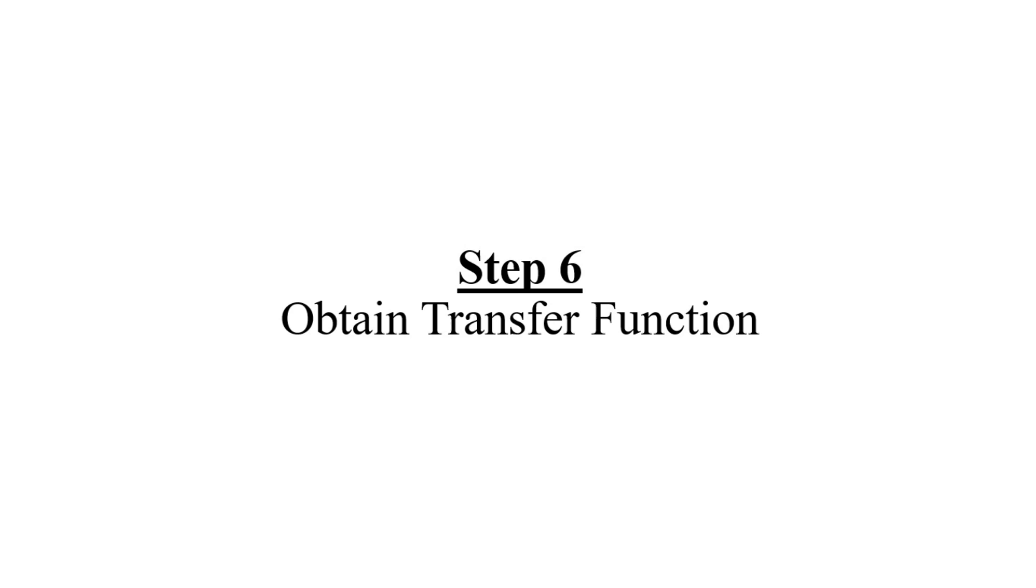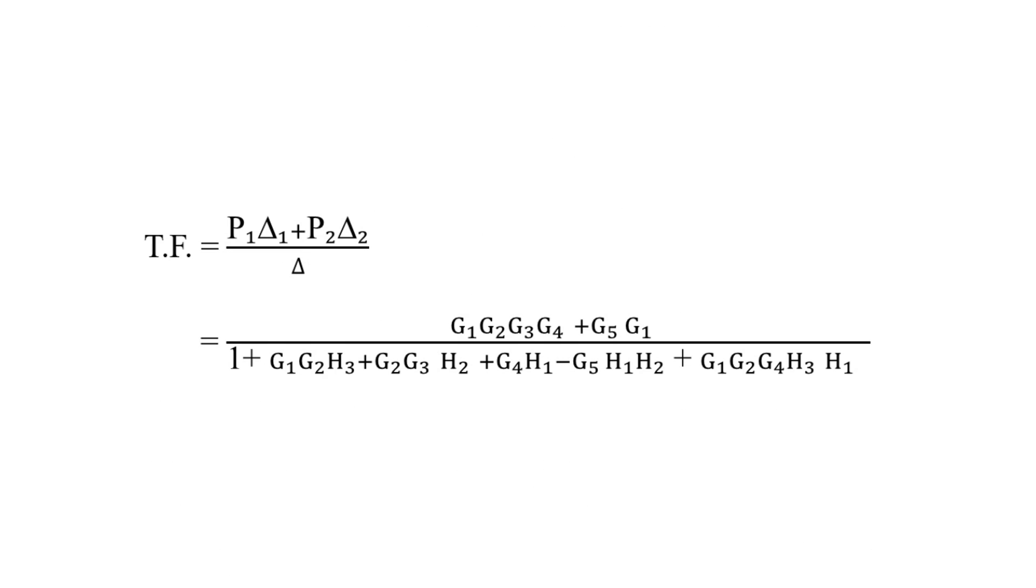Now step number six is to find the transfer function. The transfer function equals P1 times delta1 plus P2 times delta2, divided by delta. If there is a third forward path or third non-touching loop, we can expand this equation further like P1·delta1 plus P2·delta2 plus P3·delta3 plus P4·delta4, and so on, divided by delta. We have already found all values previously. Just by substituting all values, you will get your transfer function.